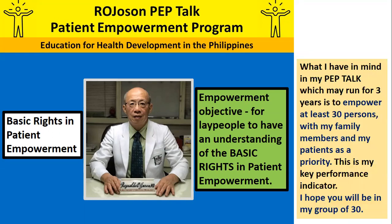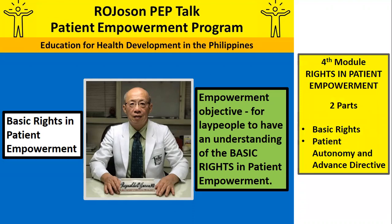What I have in mind in my Pep Talk, which may run for three years, is to empower at least 30 persons, with my family members and my patients as a priority. This is my key performance indicator. I hope you will be in my group of 30. The fourth module, entitled Rights in Patient Empowerment, has two parts: Basic Rights, and Patient Autonomy and Advanced Directives.